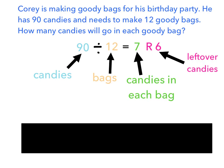Here's the first story problem. Corey is making goody bags for his birthday party. He has 90 candies and needs to make 12 goody bags. How many candies will go in each goody bag?